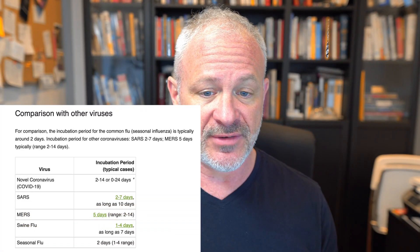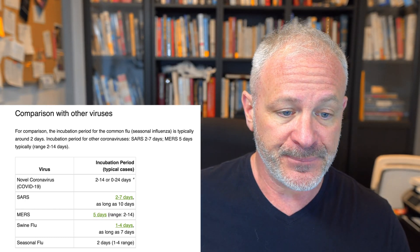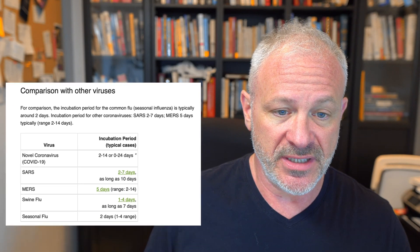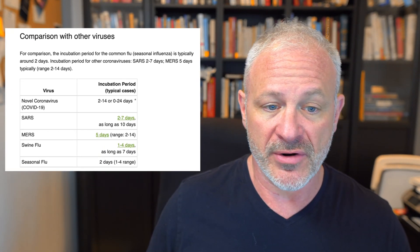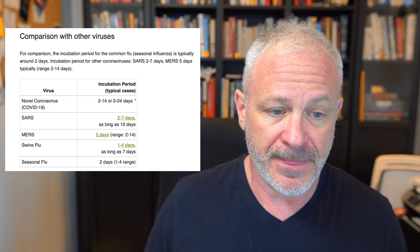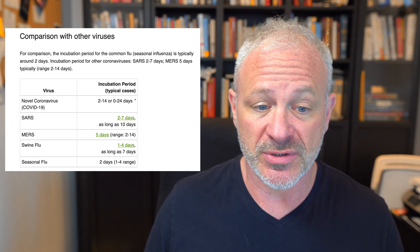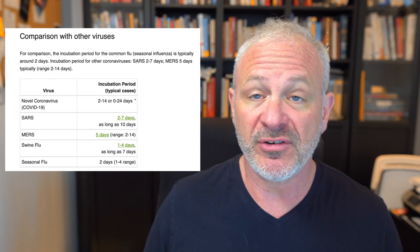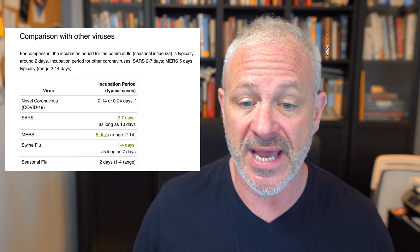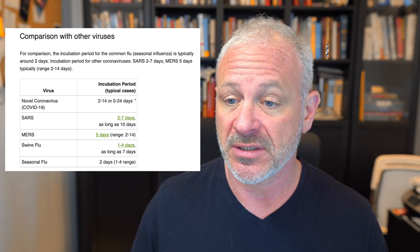Just to give you an idea of comparison: the novel coronavirus COVID-19 is 2 to 14 days. SARS was 2 to 7 days. MERS was 5 days. Swine flu is 1 to 4 days. And a typical seasonal flu is 2 days from time of exposure to expression of symptoms.